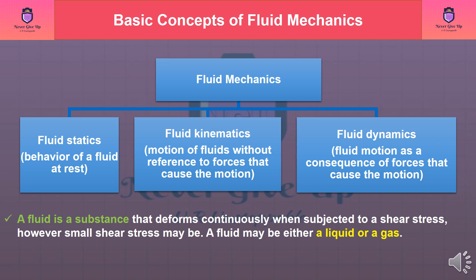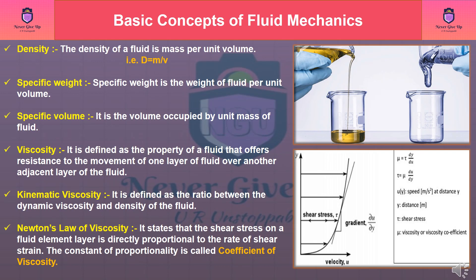A fluid may be either a liquid or a gas. Density: the density of a fluid is mass per unit volume. Specific Weight: specific weight is the weight of fluid per unit volume. Specific Volume: it is the volume occupied by unit mass of fluid. Viscosity: it is defined as the property of a fluid that offers resistance to the movement of one layer of fluid over another adjacent layer of the fluid. Kinematic Viscosity: it is defined as the ratio between the dynamic viscosity and density of the fluid.